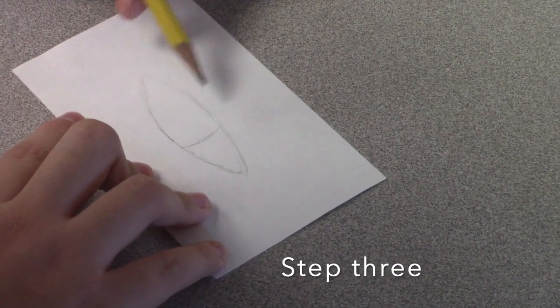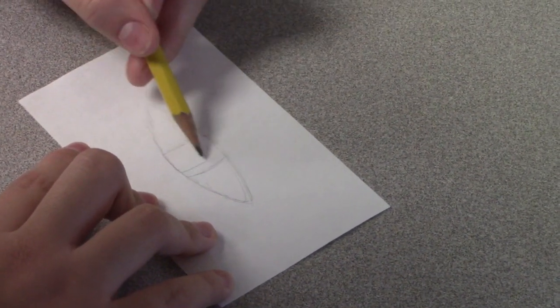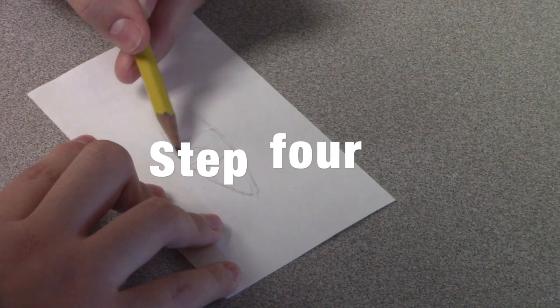Then, draw a circle inside the curved lines. Then, draw the pupil and a highlight.